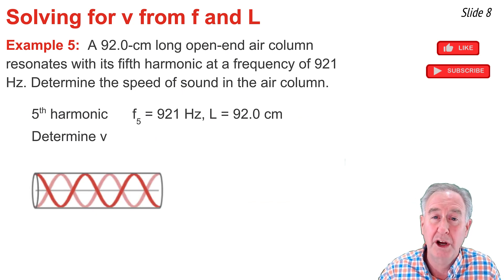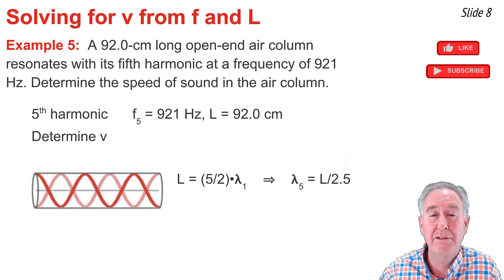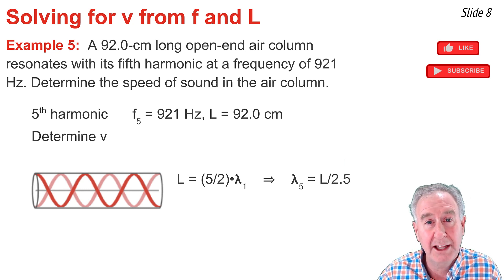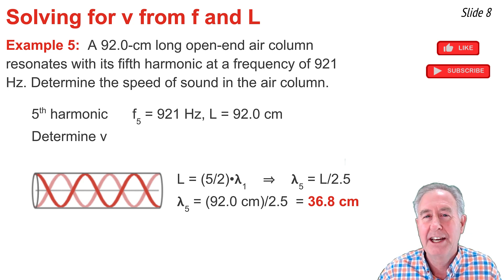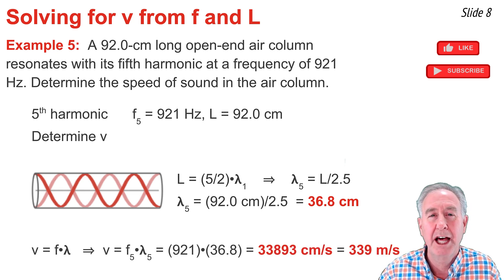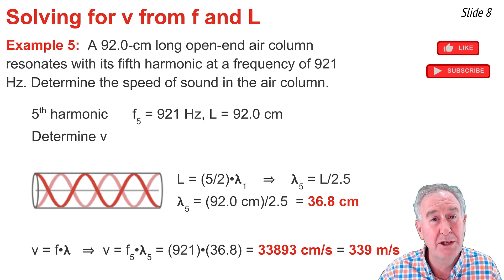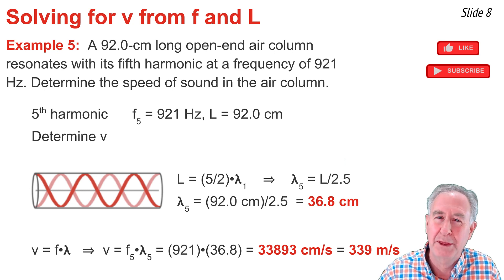I draw the standing wave pattern for the fifth harmonic and note there are five halves of a wave within the air column length, so L = (5/2) × lambda. Rearranging, wavelength = L / 2.5, giving me the wavelength of the fifth harmonic at 36.8 cm. I then multiply the wavelength by the frequency of 921 Hz. Since the wavelength is in centimeters, the speed comes out in centimeters per second, and dividing by 100 gives a speed of 339 m/s.